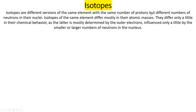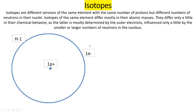That is why isotopes of the same element differ mostly in the atomic masses. The isotopes differ very little in chemical behavior, because chemical behavior is mostly determined by the outer electrons, which are influenced very little by a smaller or larger number of neutrons in the nucleus.